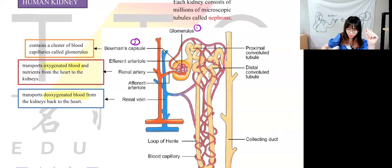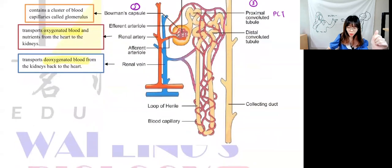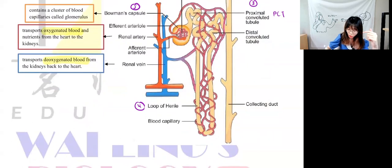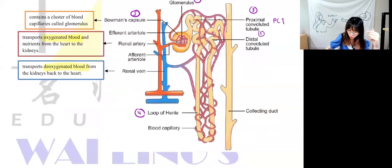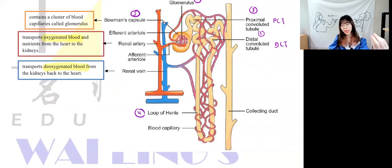Along the Bowman's capsule, you reach a place called the proximal convoluted tubule — number three, or PCT. Moving down, we have the loop of Henle — number four. The fifth one is the distal convoluted tubule, or DCT. Proximal means the top part; distal means the ending part. If you learned this in Form 4 Chapter 1, you'll remember the meaning.